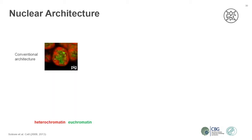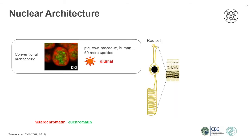Let's look at the cellular architecture. The normal arrangement of chromatin or DNA material in the cell nucleus is such that the euchromatin, or the transcriptionally active chromatin, is in the center of the nucleus, shown here in green, and heterochromatin, which is transcriptionally inactive or silenced chromatin, is located along the nuclear membrane or periphery, shown here in red. This normal arrangement is also found in the rod photoreceptors of diurnal animals, or animals that are active during the day.